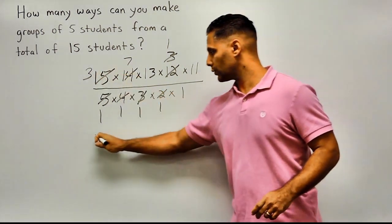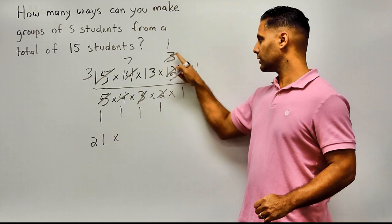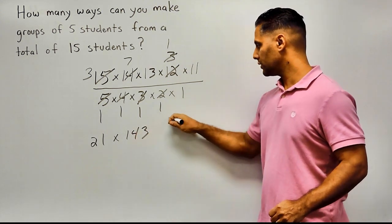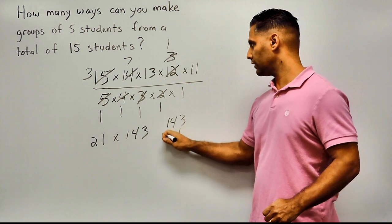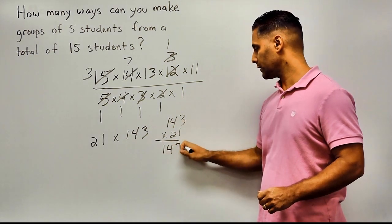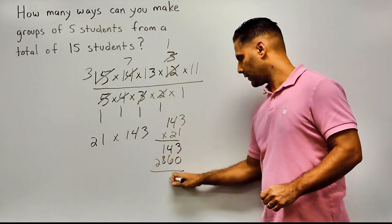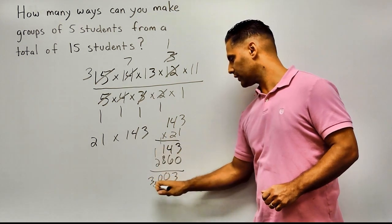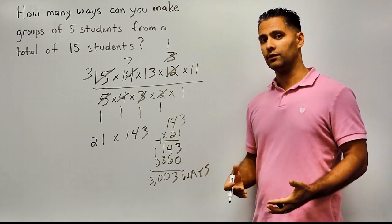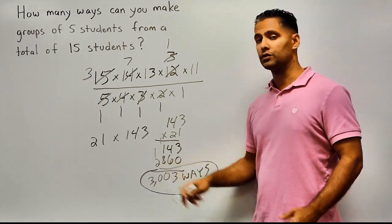Multiply 3 times 7 to get 21. Then 13 times 1 times 11 gives 143. Next, multiply 143 by 21: one times 143 is 143, two times 3 is 6, two times 14 is 28, giving us a total of 3,003 ways. So we can create groups of five students 3,003 ways from a total of 15 students. That is another example of how to use the NCR function.